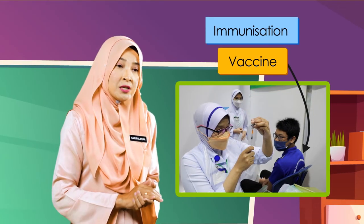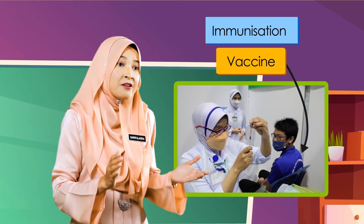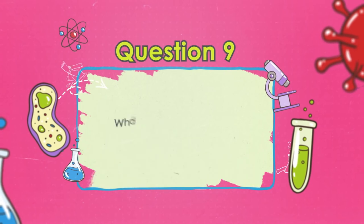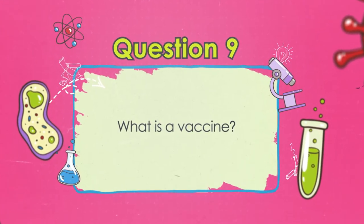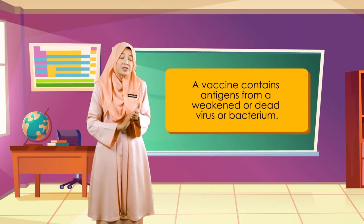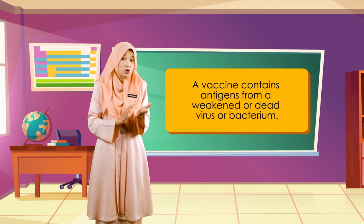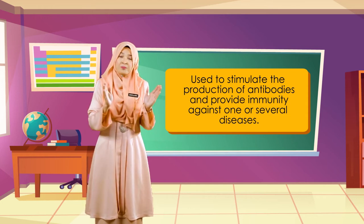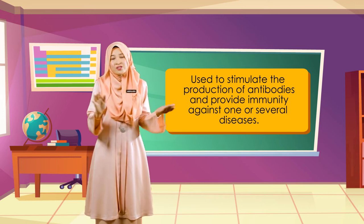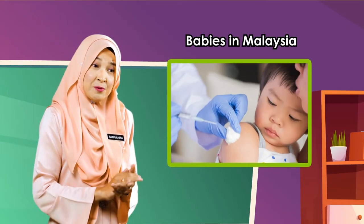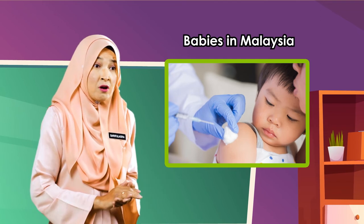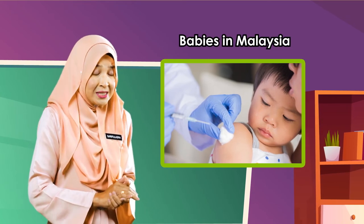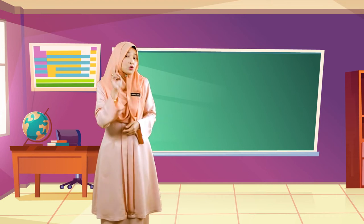Immunization is an effort to stimulate the body's defense against infections by injecting a vaccine into the body. A vaccine contains antigens obtained from weakened or dead pathogens. It is used to stimulate the production of antibodies and provide immunity against one or several diseases. Babies in Malaysia need to be injected with a few types of vaccines so that their bodies form immunity against several diseases.